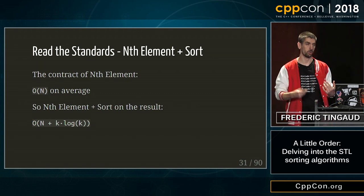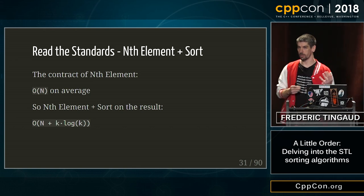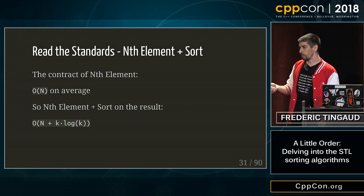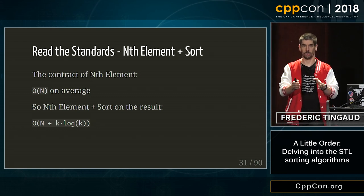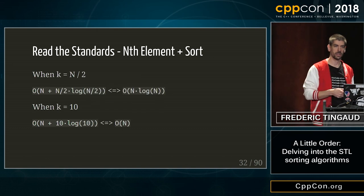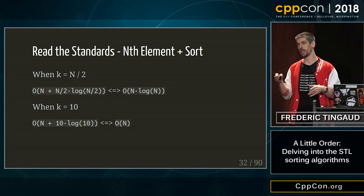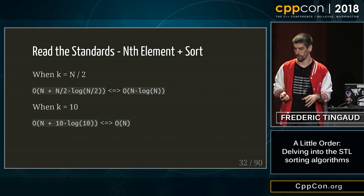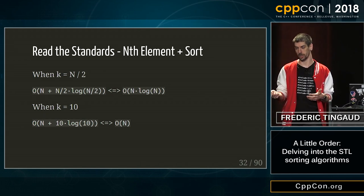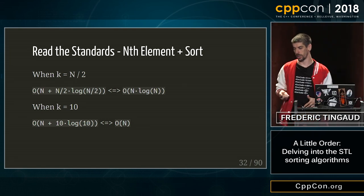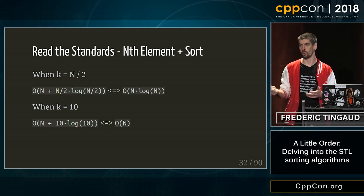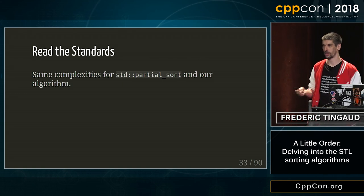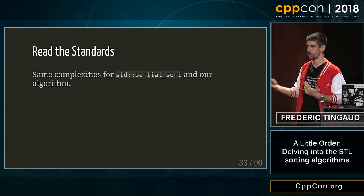Our homemade algorithm — NthElement plus sort — has NthElement at O(N) on average, which didn't change with C++11. NthElement plus sort is O(N + K log K) because we only sort K elements. In the case of a median, that means O(N + (N/2) log(N/2)), which simplifies to O(N log N), exactly like PartialSort. For a scoreboard of 10 players with millions of players, it's O(N + 10 log 10), which is also O(N), the same as PartialSort. So we checked all the complexities — they are identical. This is not where the difference between our algorithm and PartialSort is.